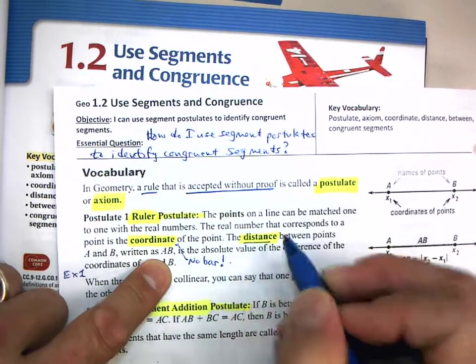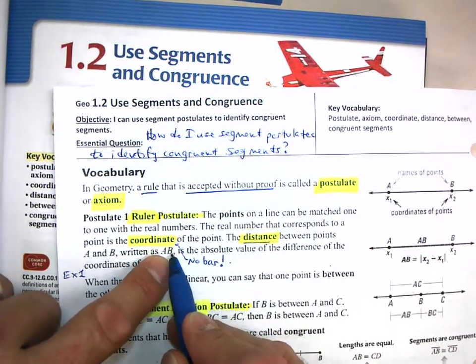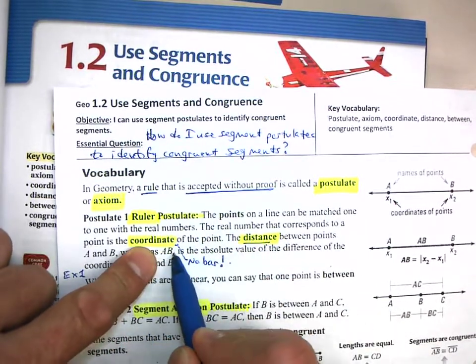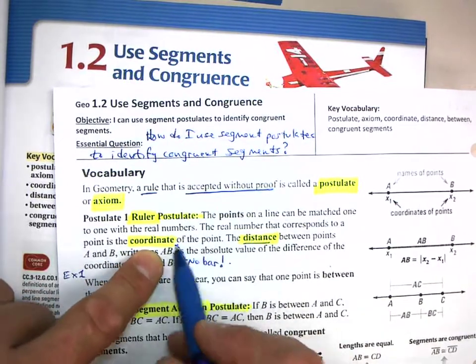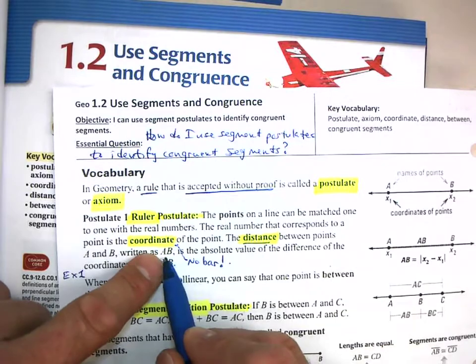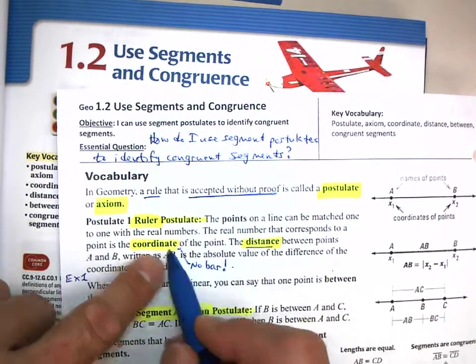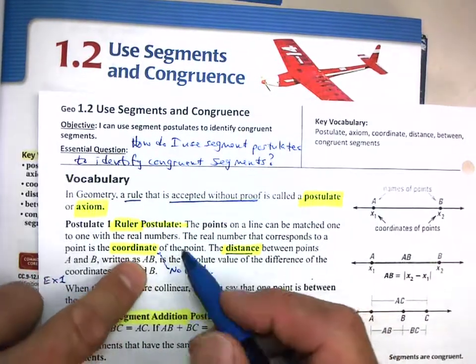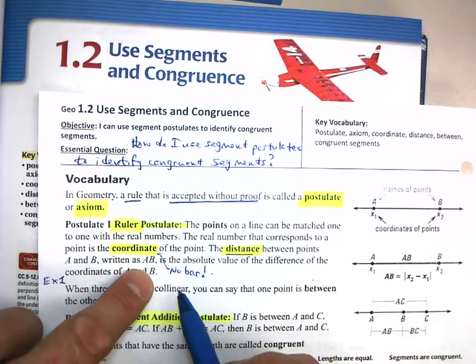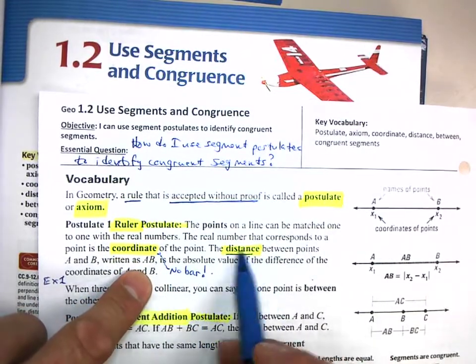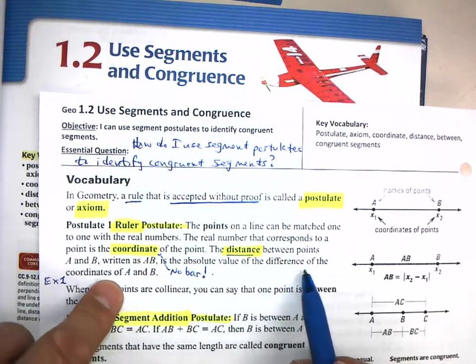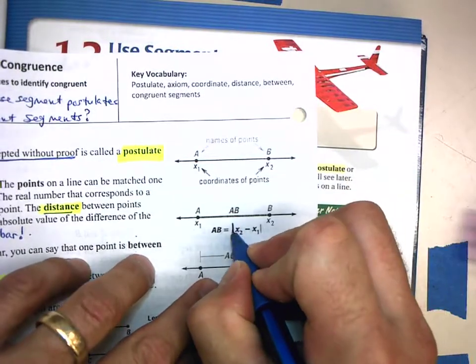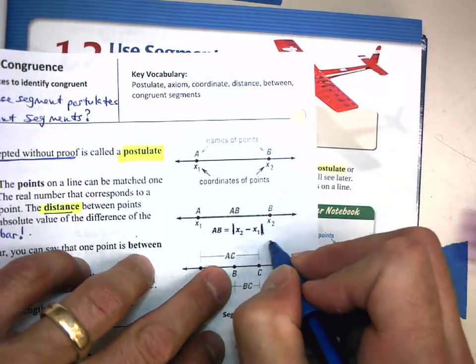But when there's no bar, it means distance. So just writing AB in geometry means the distance between point A and point B. It's easier just to write AB. This distance is the absolute value of the difference of the coordinates of A and B.